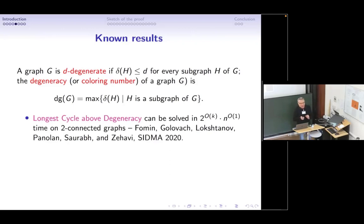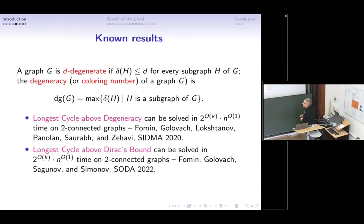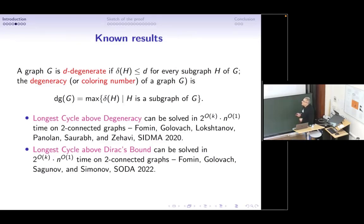That was the first step. Then with some reinforcement we managed to deal with Dirac's bound. We showed that longest cycle above Dirac's bound can be solved in a similar time, again on two-connected graphs. This result was obtained by me, Daniel Sagunov, and Kirill Simonov, and it will appear in SODA 2022. Daniel Sagunov gave an online talk — it was recorded and you can find it on YouTube.